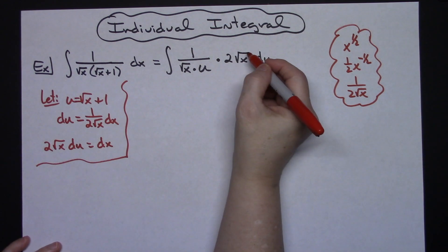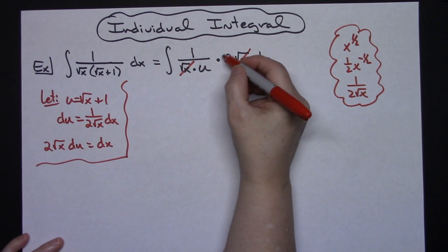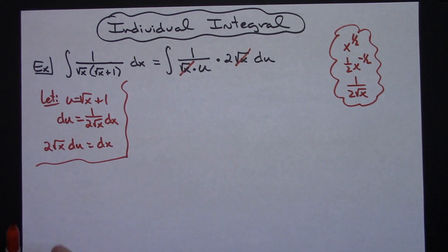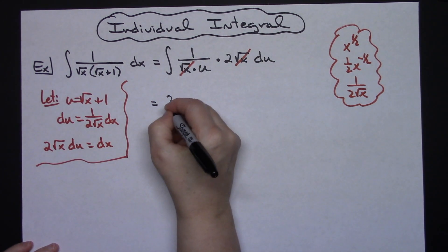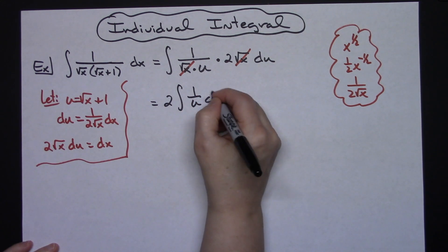Hopefully at this point you can clearly see that your square root of x and square root of x is going to cross out. And we're going to be able to take that 2 and pull it out in front. So we're going to have a 2 times the integral of a 1 over u du.